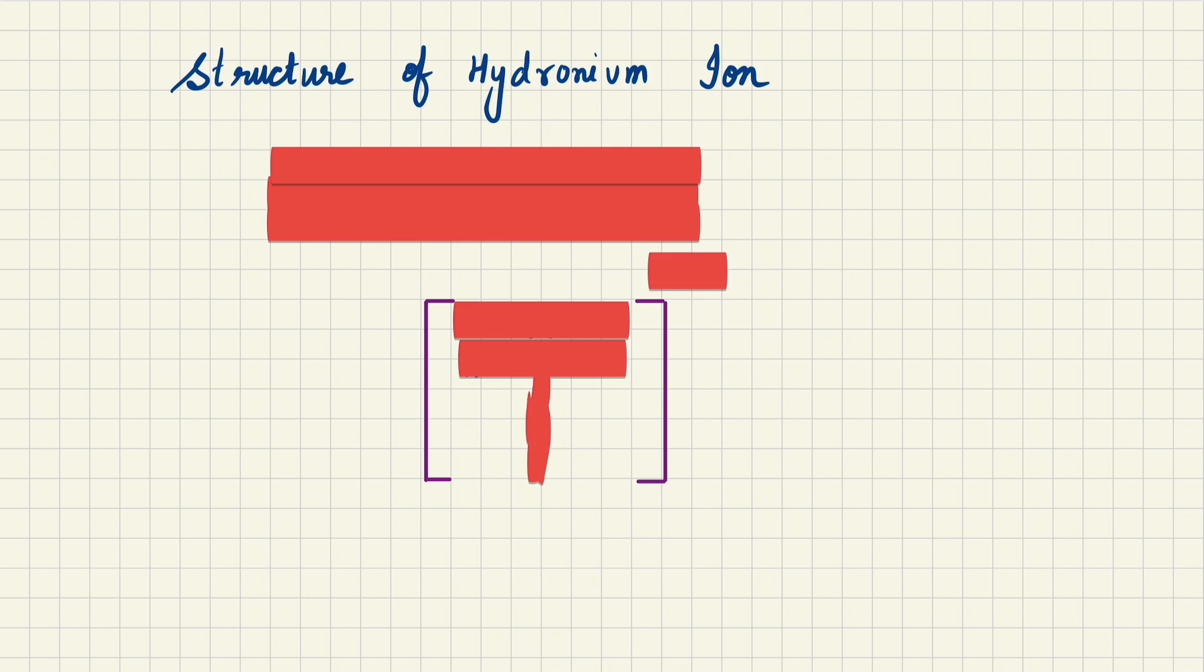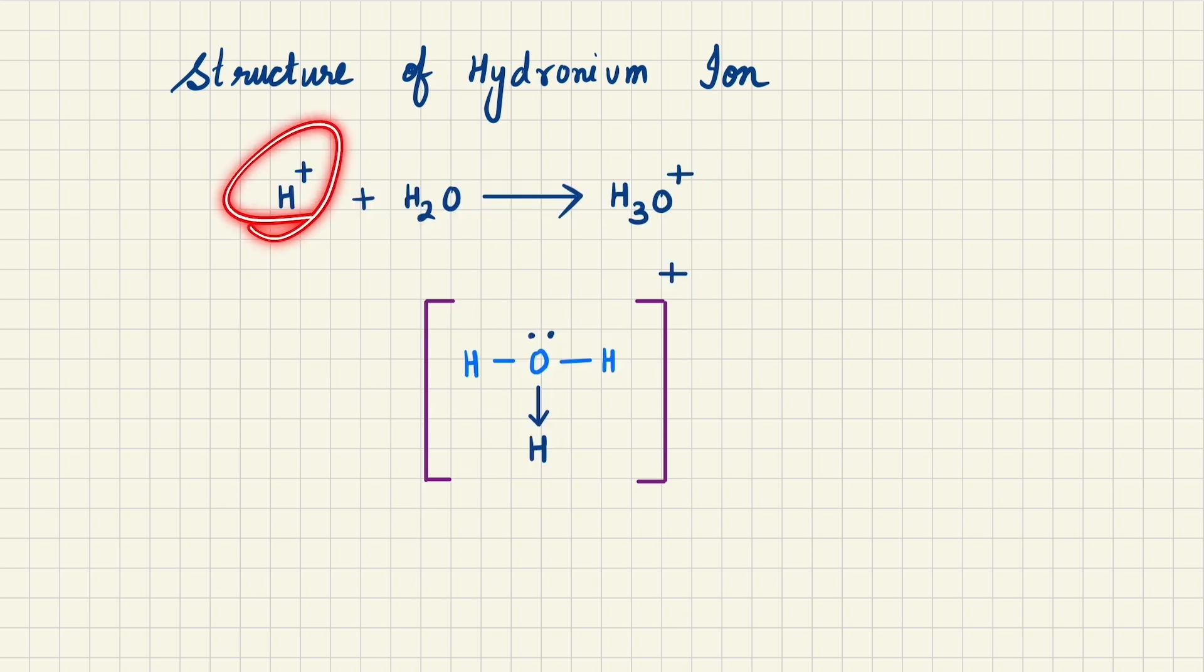We have the structure of hydronium ion. If we look here, H+ ion coming from an acid reacts with water to give H3O+, and this is the formula for hydronium ion. Now structure-wise,